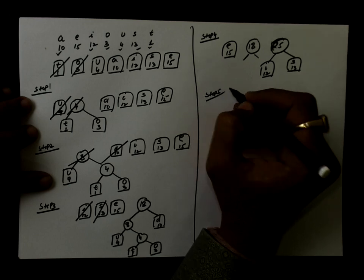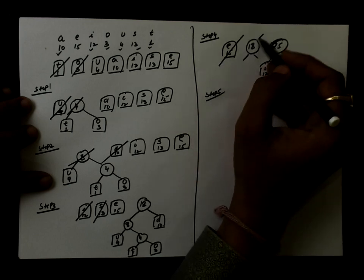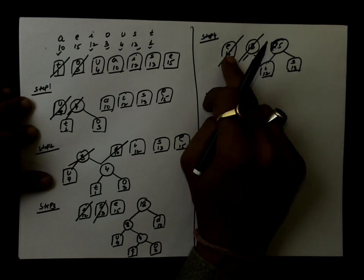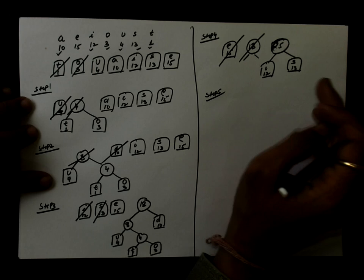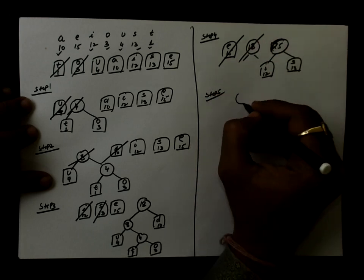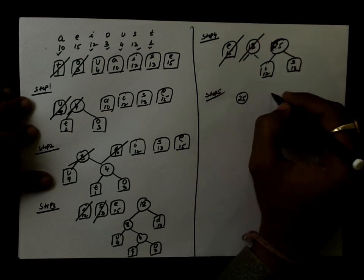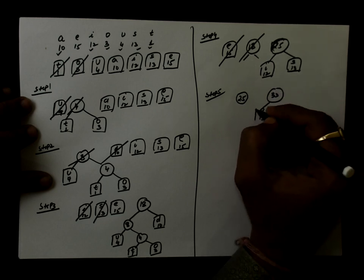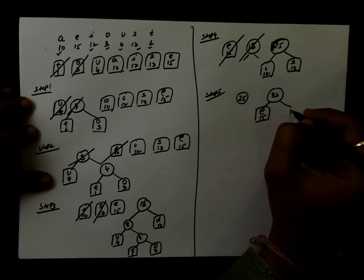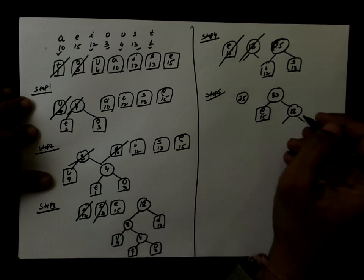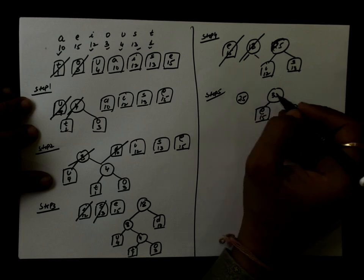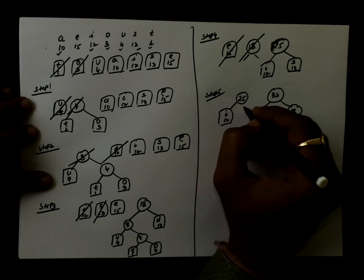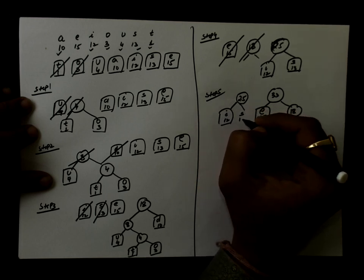Then we will do step 5. In step 5, we are going to delete these two front elements. The cumulative sum will be 18 plus 15, which equals 33. 33 will be inserted after 25. So 25 is at the beginning, then 33. For this new node, E with 15 is the left child and the 18 node, which has its own left and right children, is on the right side.